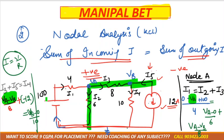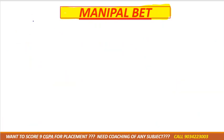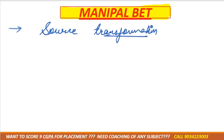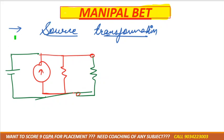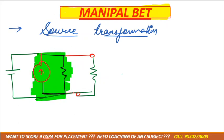With two variables VA and VB and two equations, we solve in a calculator to get the values, then find the currents. The next topic is source transformation — the conversion of a current source to a voltage source and vice versa. It's not only used when explicitly mentioned; it can also simplify circuits. A current source in parallel with a resistance can be converted into a voltage source.